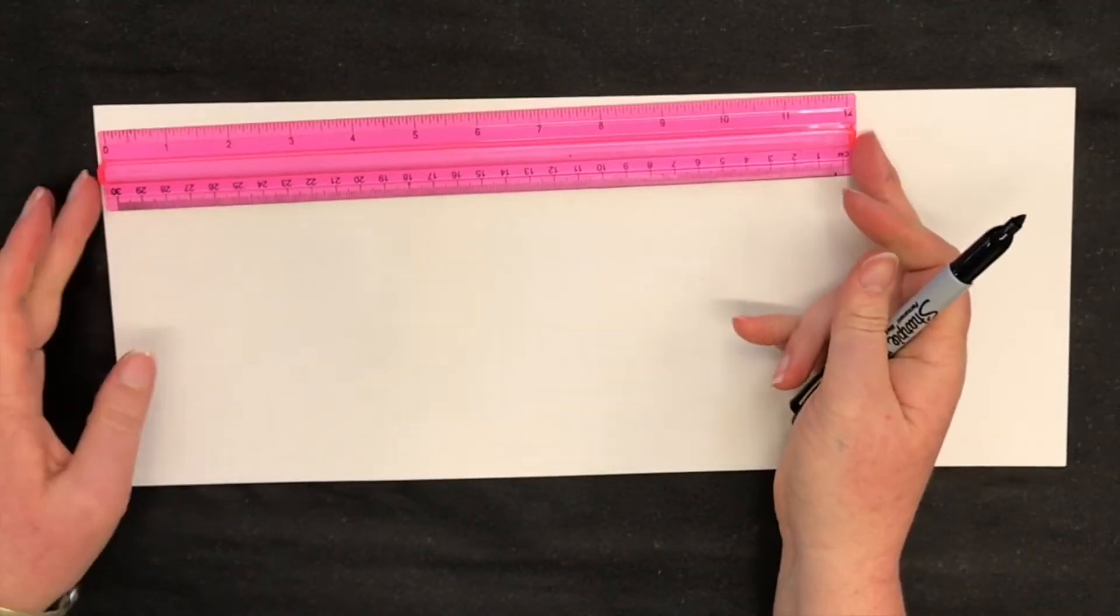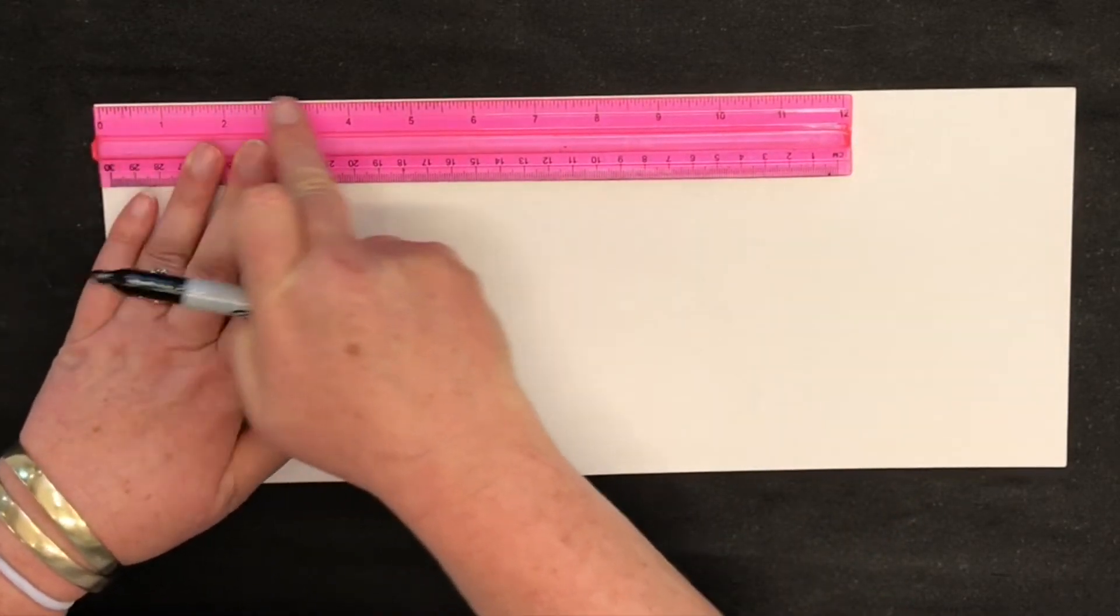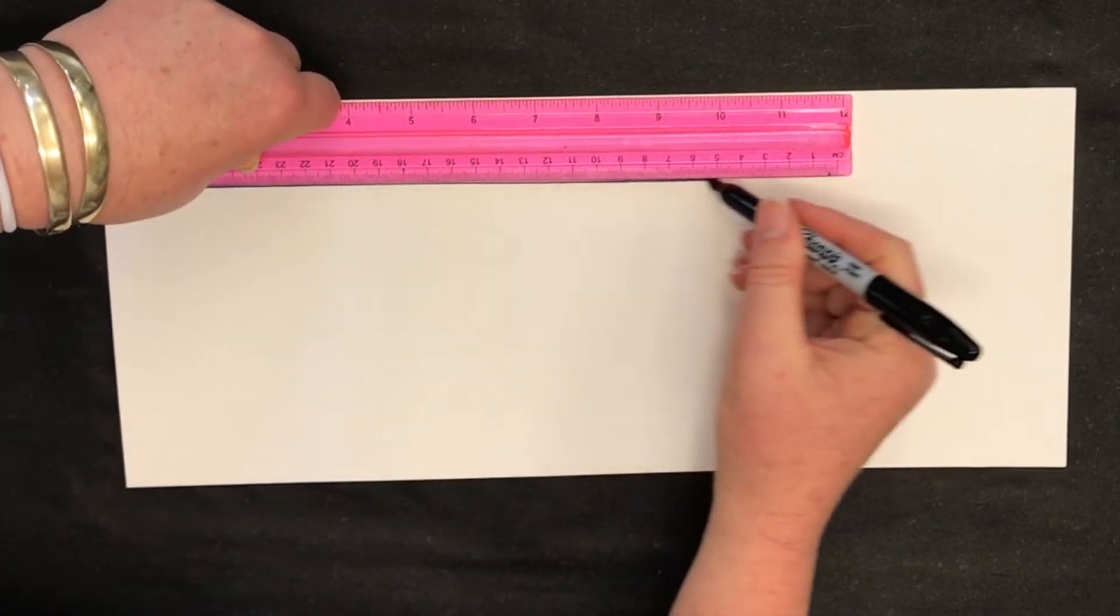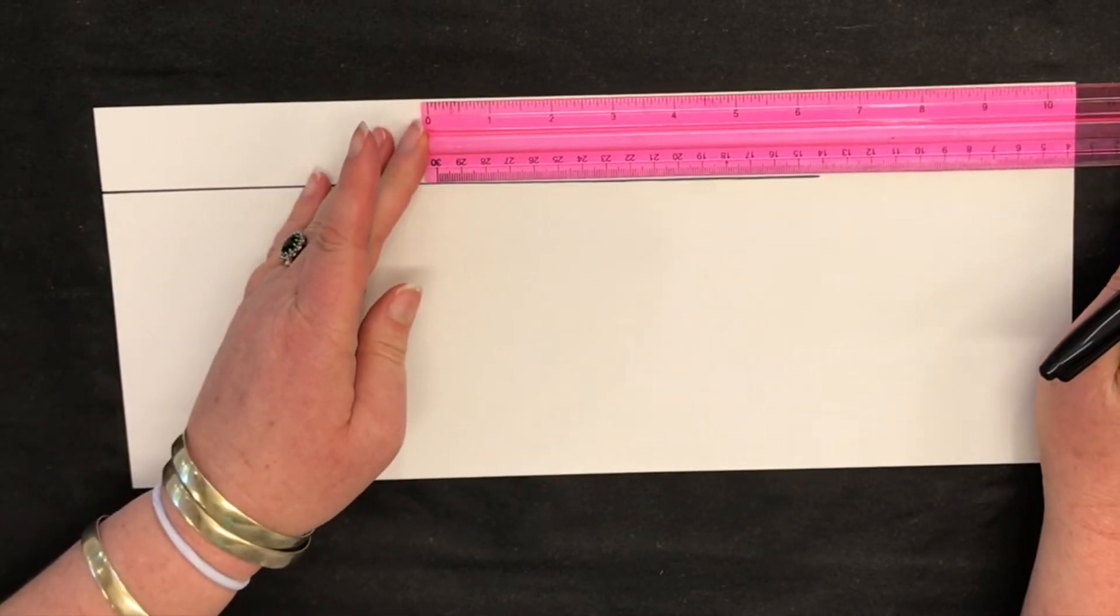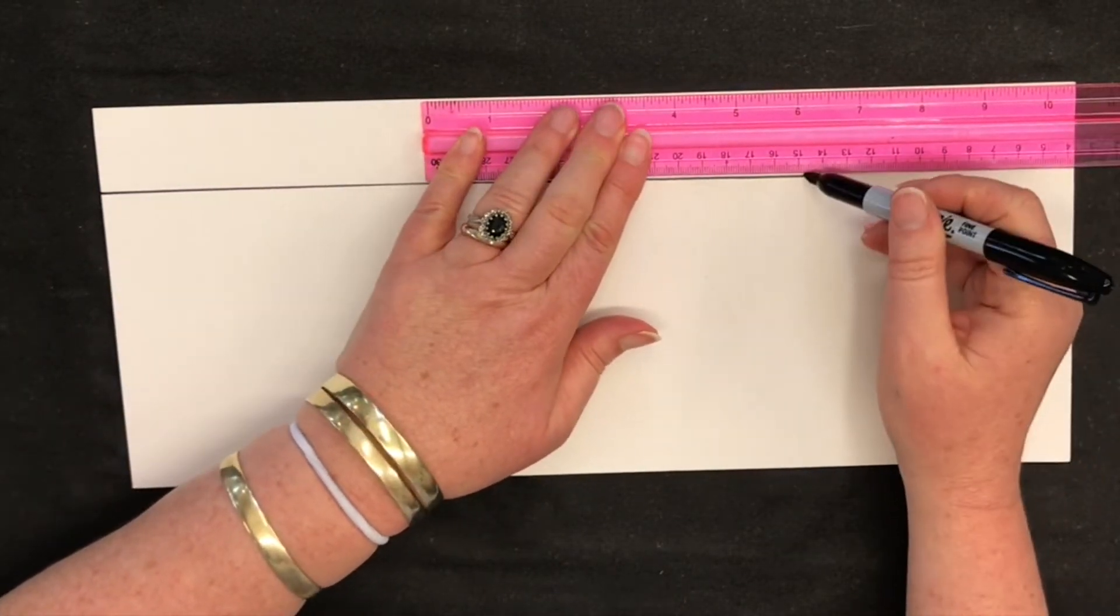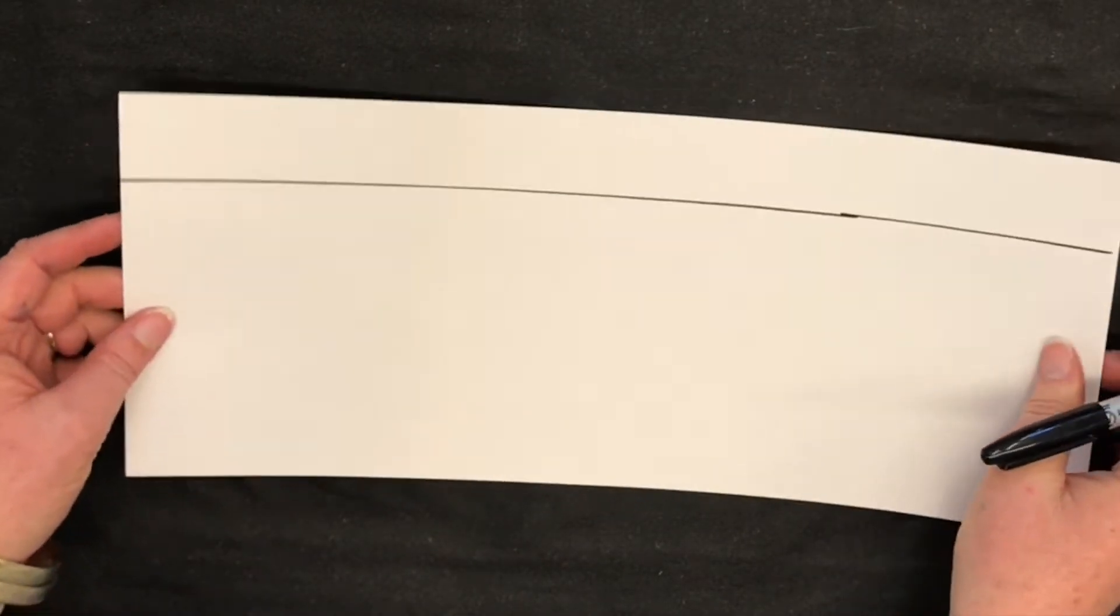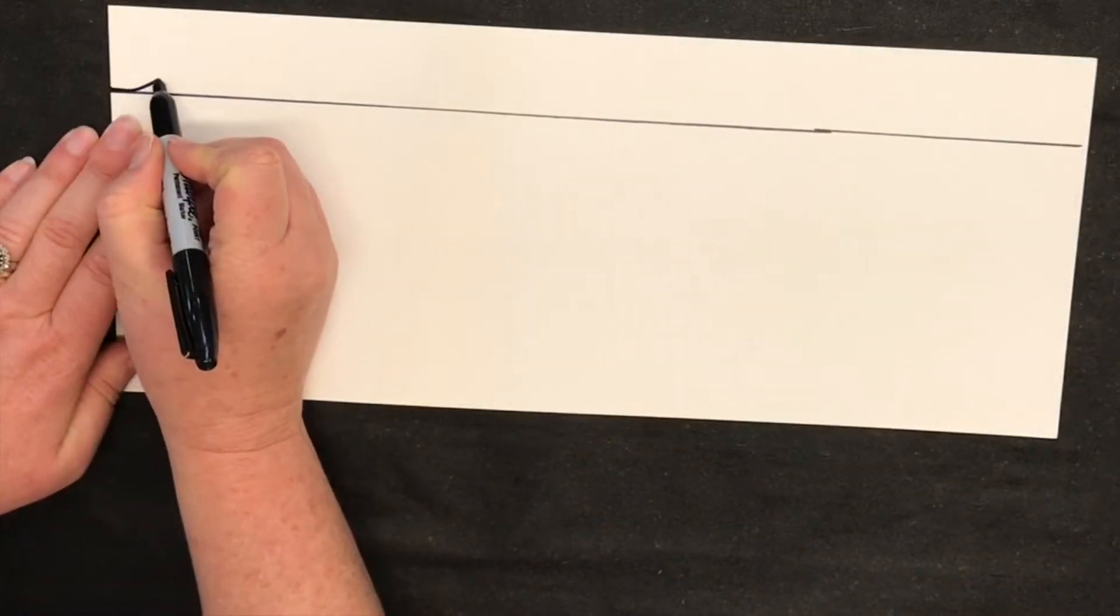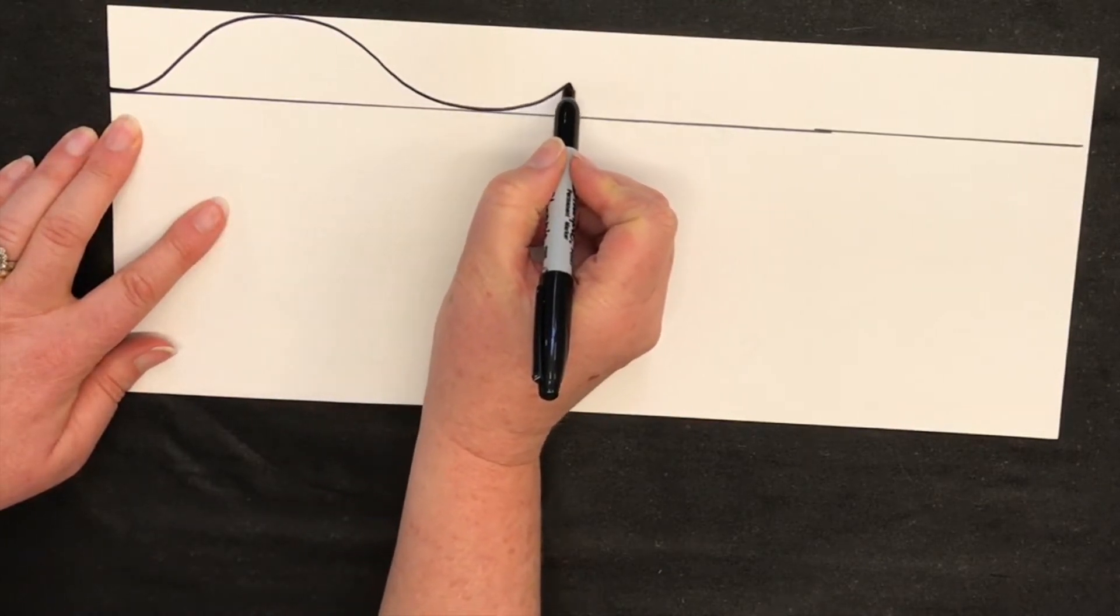This final bonus section of the tutorial will show you how to go about creating a weaving that has curves rather than straight lines in the loom. The first thing you would want to do is to create a stencil. I'm using a piece of card here. As before, I am again working with the width of the ruler here. Within the width of that ruler space, I draw the waves freehand with the marker, and once done, I cut this out with a pair of scissors.